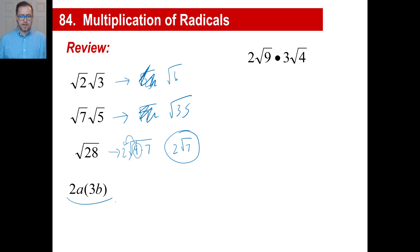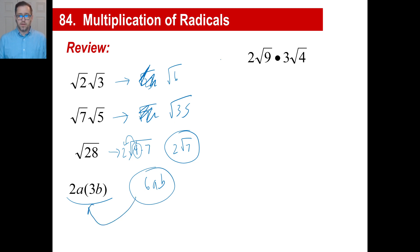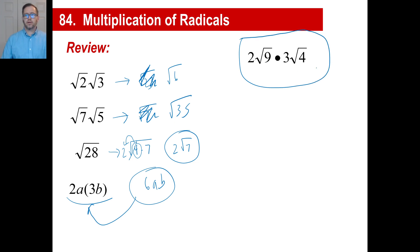What is 2a times 3b? The numbers together give 6, and a times b is ab — so 2a times 3b is 6ab. You can do the same thing with radicals: just substitute the radical expressions in place of the variables.